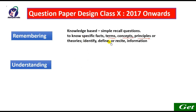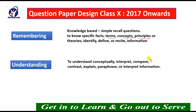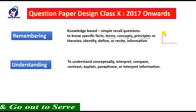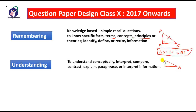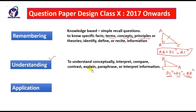The second parameter is understanding. You can recall knowledge, but do you understand it? For example, teachers teach the Pythagoras theorem as: in right triangle ABC, AB² + BC² = AC², where AC is the hypotenuse. We can recall this, but understanding is checked by changing the situation — for instance, renaming the triangle so that BC² + AC² = AB² — testing whether you truly understood the principle.